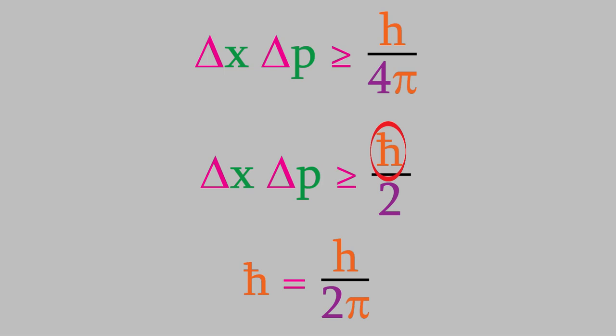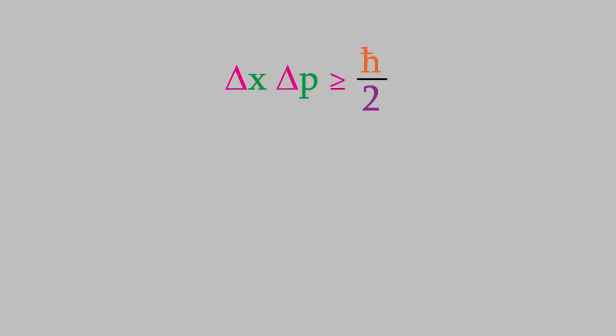h over 2 pi is a quantity that occurs in many of the equations of quantum mechanics, so it's convenient to have a symbol for it to save us a little writing. As I mentioned earlier, the position and momentum of a particle are called complementary variables. It turns out that there are several other pairs of complementary variables, and they obey an inequality similar to the one we've seen for position and momentum.